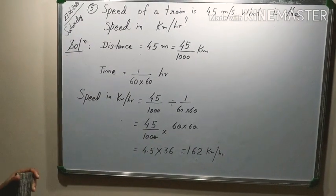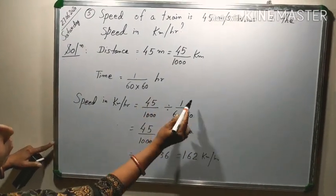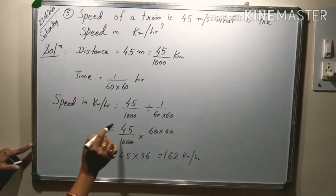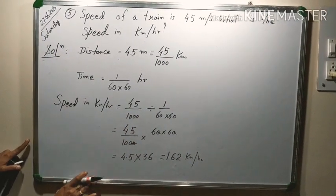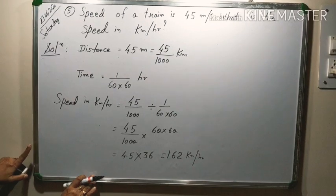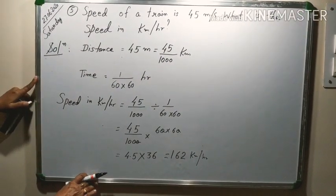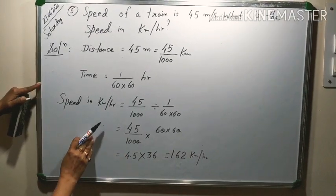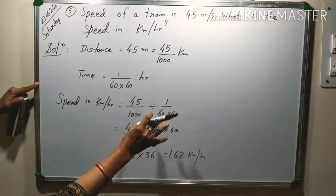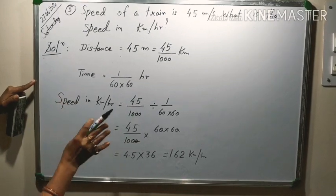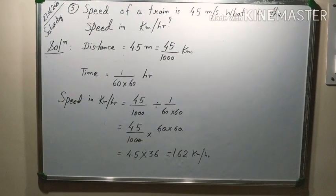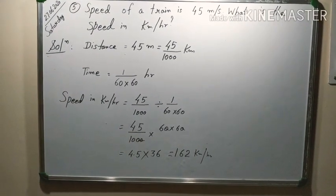So, in this question also, here only many of you could not do nicely and you didn't reach to the correct answer and this is very simple question generally asked to convert. So, be careful how we have to write here distance and separately time. First you convert there and then you put the values you will get the correct answer. Thank you children.